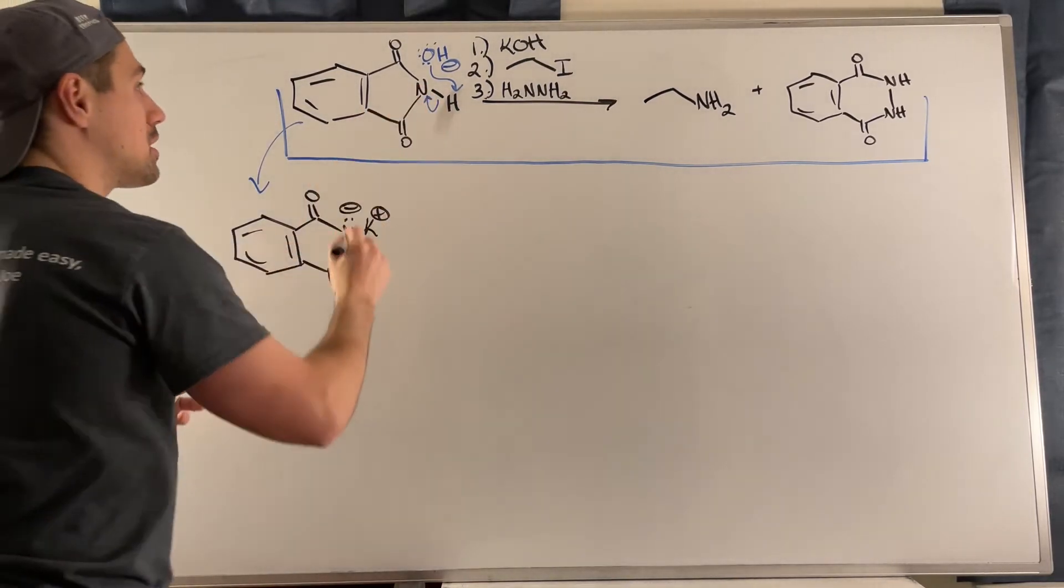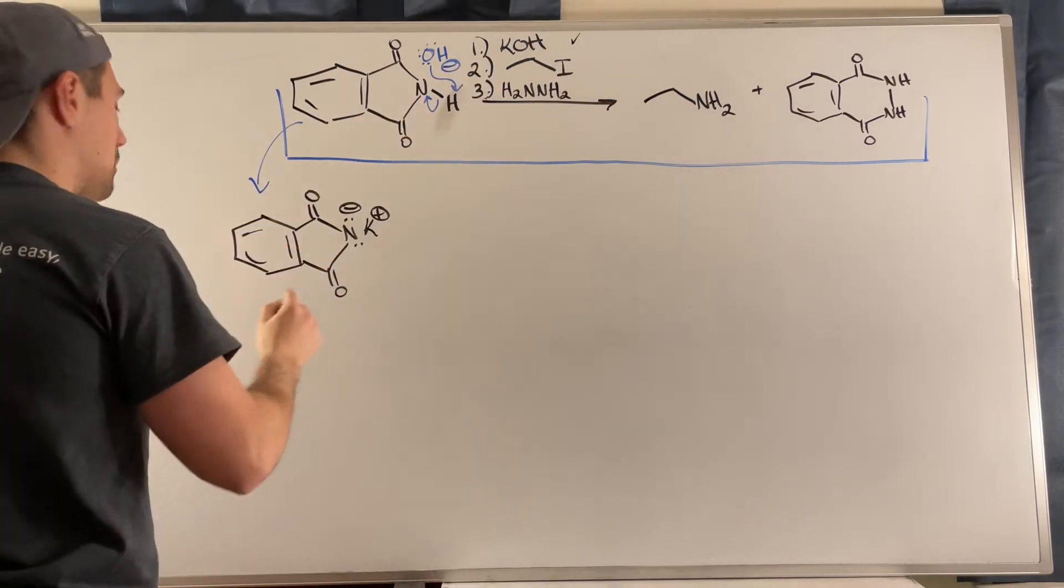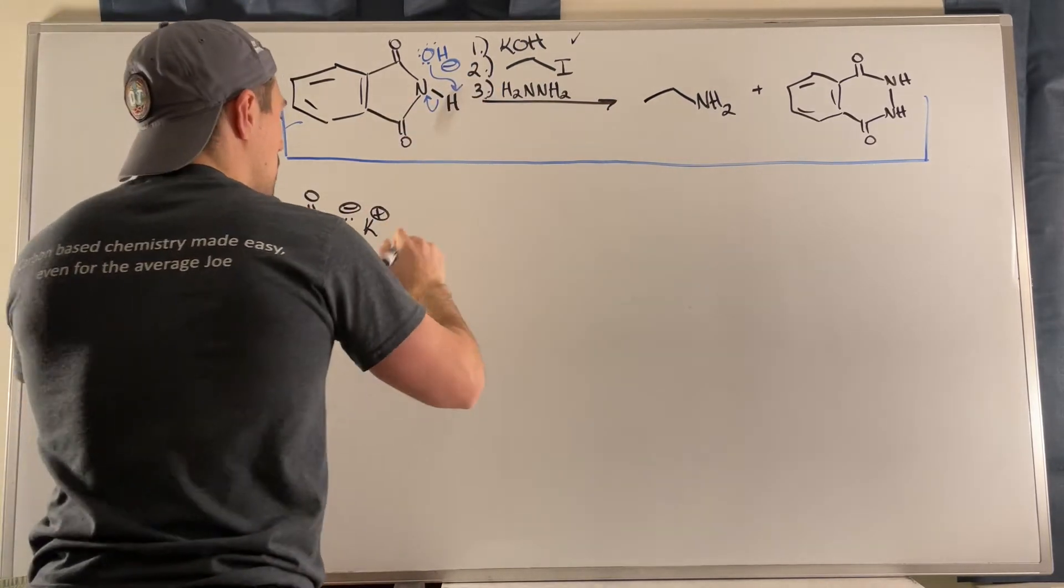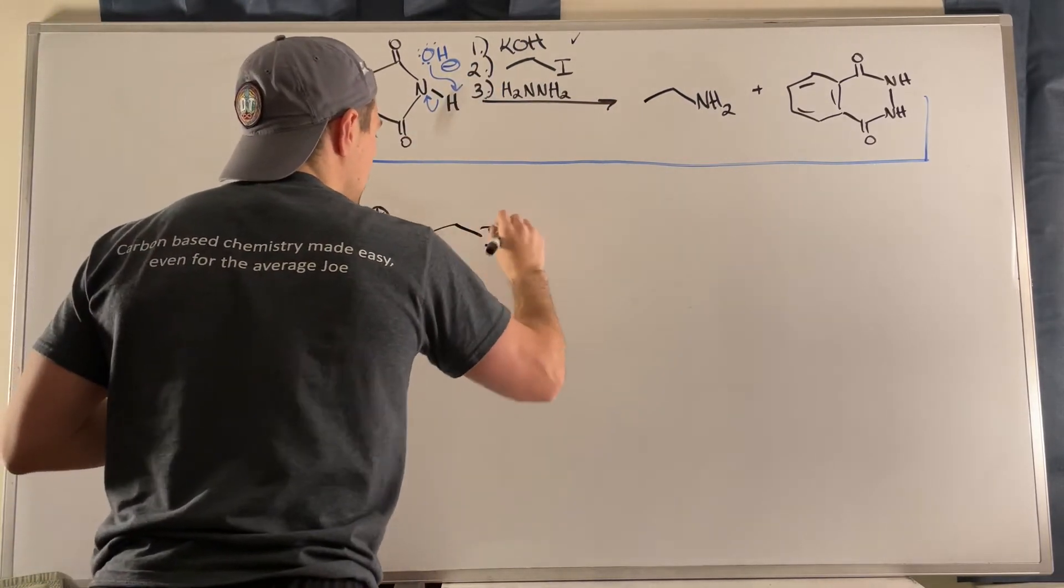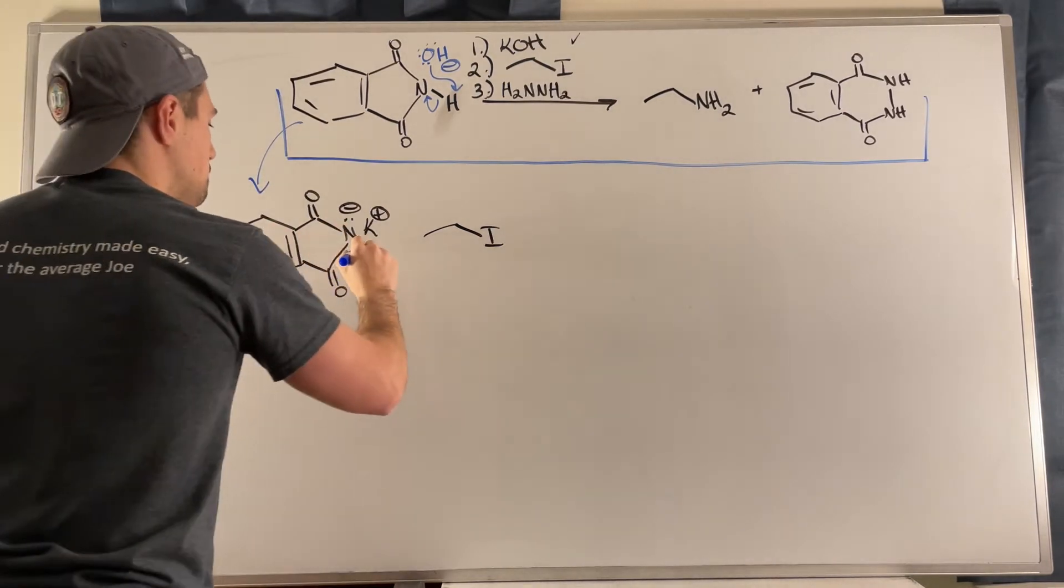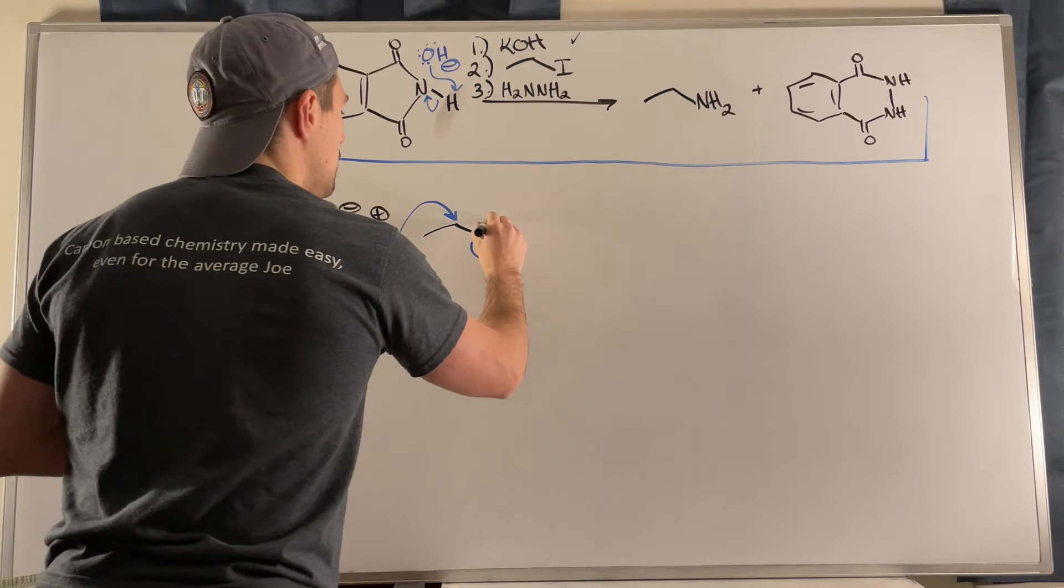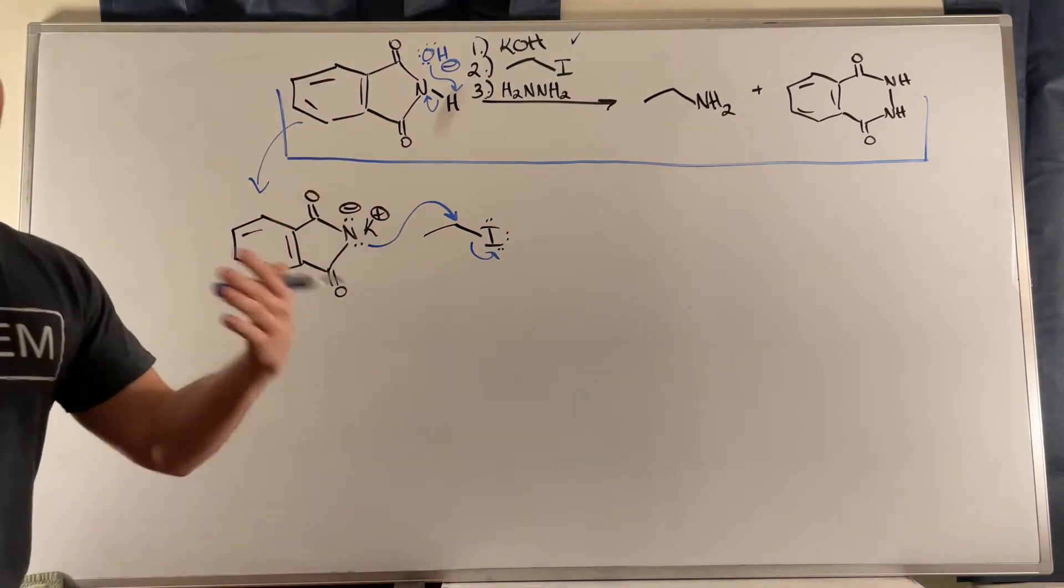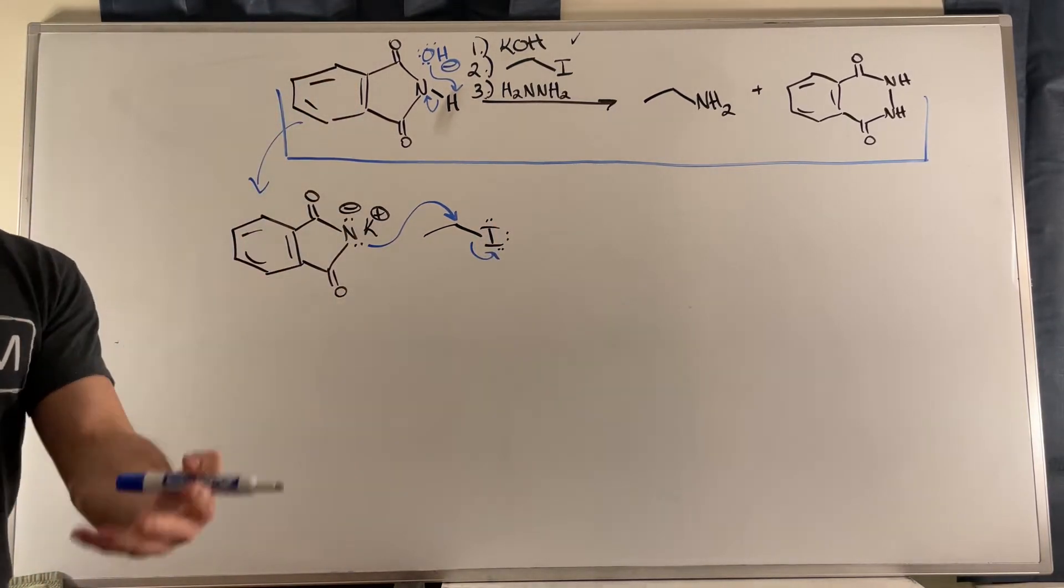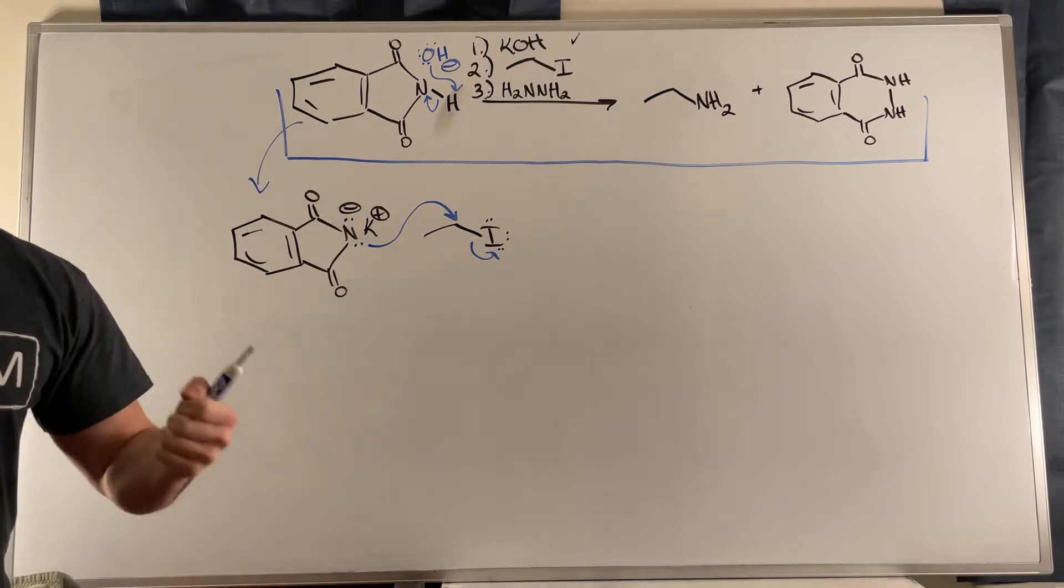So what we can do is we can bring, that's step one, a little check mark there. Now we bring in the ethyl iodide or whatever substrate you have to attack. So the nitrogen will go ahead and attack that primary carbon. We will boot off our leaving group, which here is iodide, very good, weak base, stable. We know the drill.